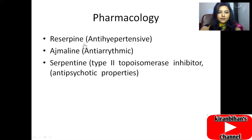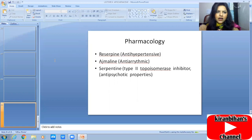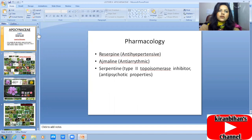The pharmacological uses of Rauwolfia alkaloids: reserpine is an antihypertensive, ajmaline is an anti-arrhythmic, and serpentine is a type 2 topoisomerase inhibitor with anti-psychotic properties. That concludes the presentation. If you have questions, please ask in the comment section, and wait for the next video on another pharmacognosy family. Take care!